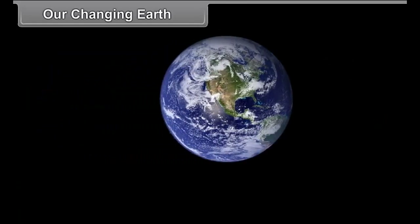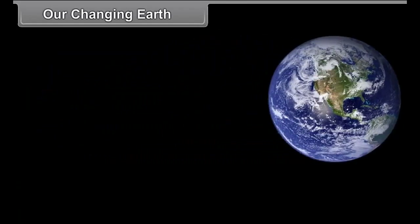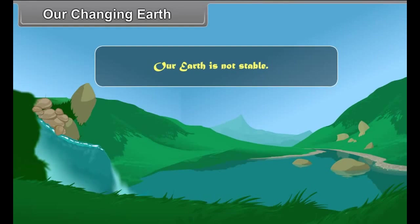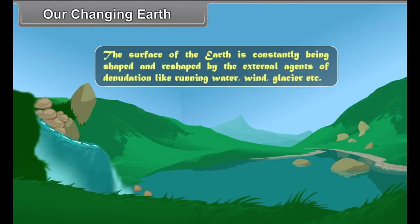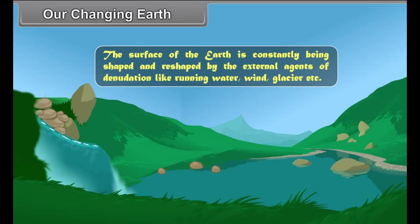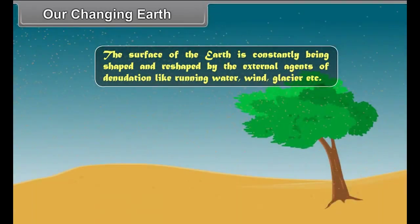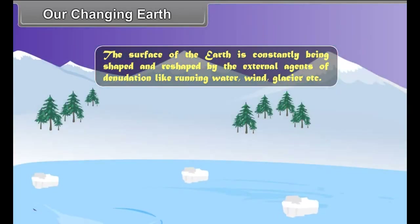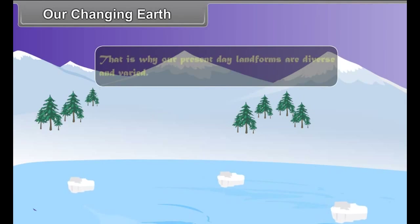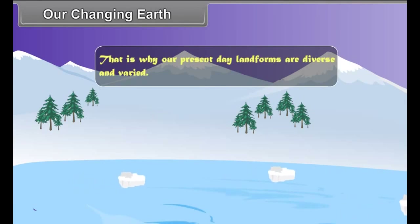Our changing earth. Our earth is not stable. The surface of the earth is constantly being shaped and reshaped by the external agents of denudation like running water, wind, glacier, etc. That is why our present day landforms are diverse and varied.